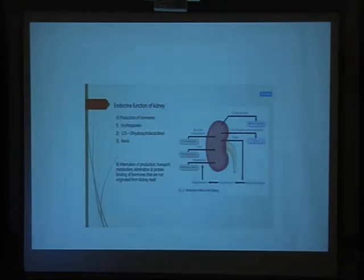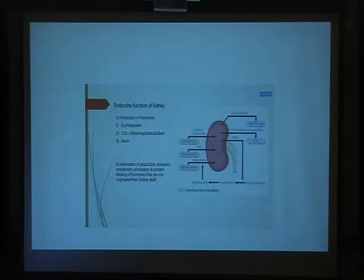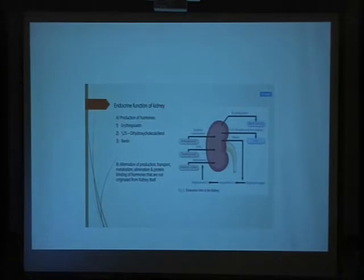During fasting, the liver produces about 95% of the glucose needed by all organs, while the kidney secretes about 5% of glucose. The liver secretes glucose by two mechanisms: glycogenolysis and gluconeogenesis. But the kidney secretes glucose only by gluconeogenesis.